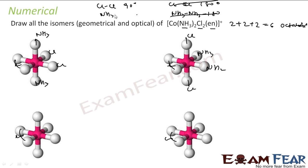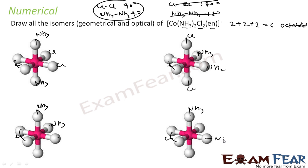If chlorine-chlorine is at 90 degrees, let's place NS3 here. Then there are two possible options for placing the next NS3 — here or here. Let's place NS3 in both positions and check if they give different structures. We then place the remaining chlorine and check whether these two are different.